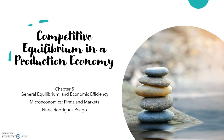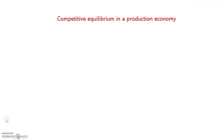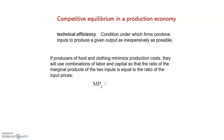Hi, this is the last video of Chapter 5, General Equilibrium and Economic Efficiency. In this video we are going to talk about competitive equilibrium in a production economy. To begin, if input markets are competitive, a point of efficient production is going to be achieved, and this is something that we are going to show.